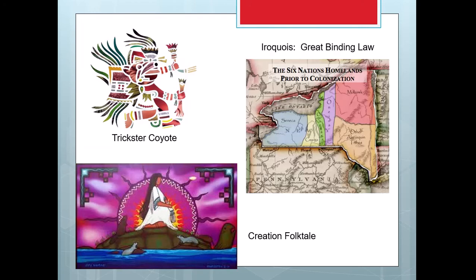Here are just some pictures. The trickster coyote — a trickster is an interesting character that's kind of amoral. They can get away with things that regular people can't because they're outside of morality, but they're not evil necessarily. Creation folktales. And this is just a depiction of New York, the Six Nations homelands prior to the colonists coming in — you can see the Algonquin, the Mohawk, the Oneida, the Cayuga, and the Seneca.